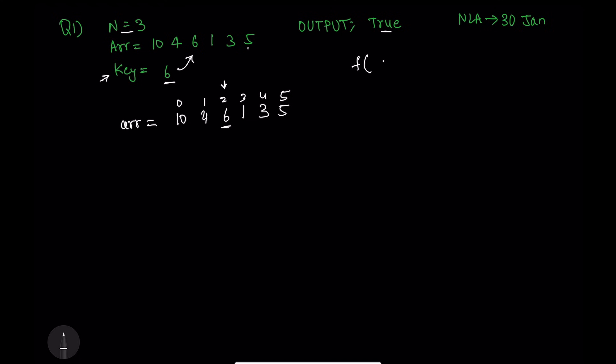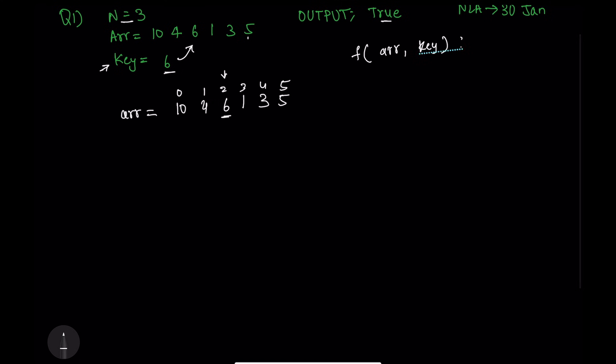The function is given to you in the test — array and key will be provided. I'm writing pseudo code and encourage you to write the actual code and let me know in the comments. I will iterate over the array: for i from 0 to length of array, I will compare. If array[i] equals the key, just return true, otherwise return false.